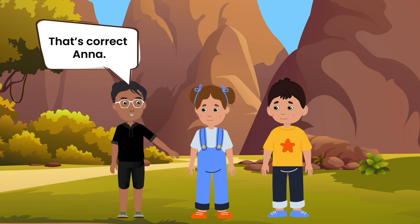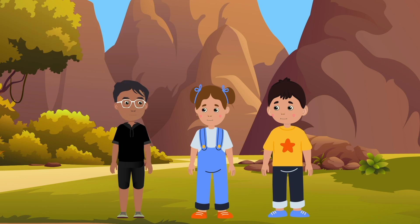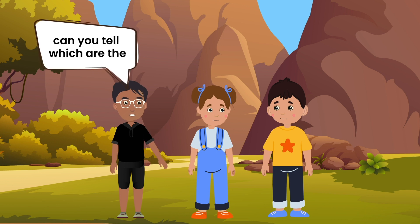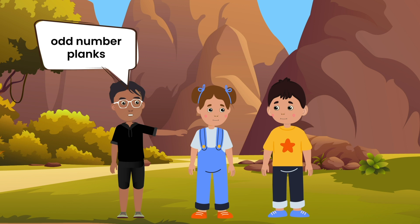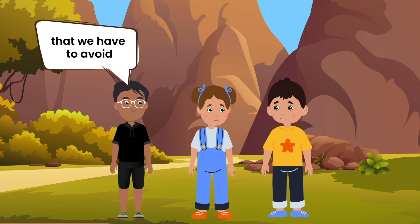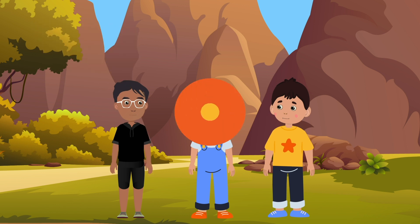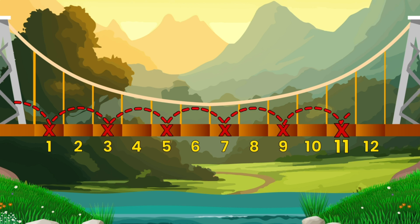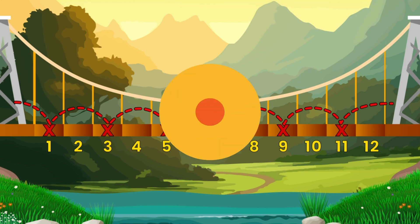That's correct, Anna. Now, Peter, can you tell which are the odd number planks that we have to avoid? They are the 1st, 3rd, 5th, 7th, 9th and 11th planks, Banu.